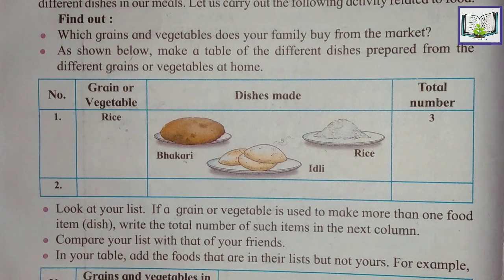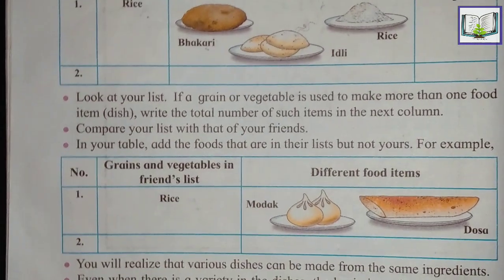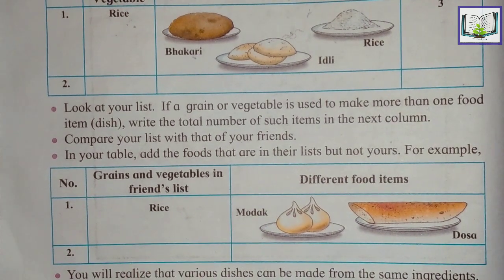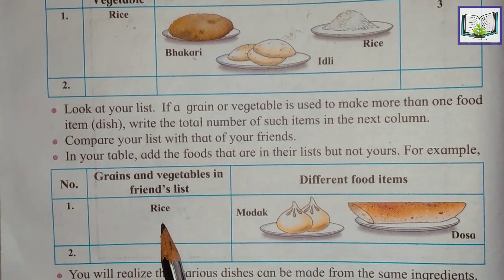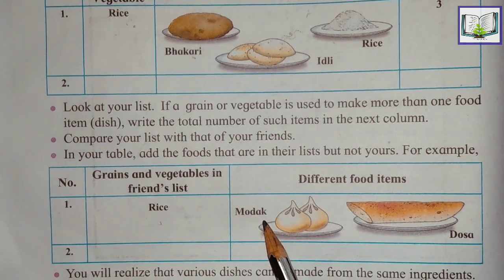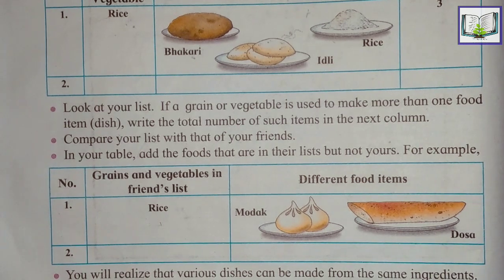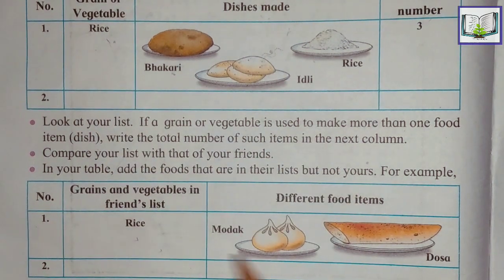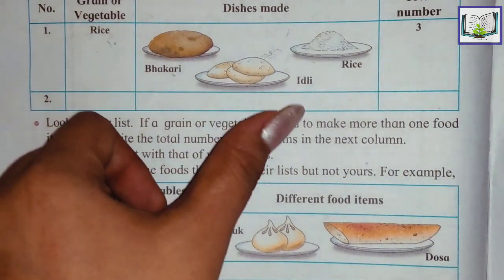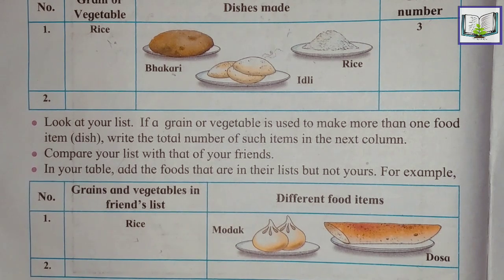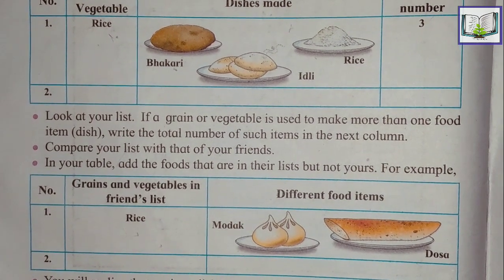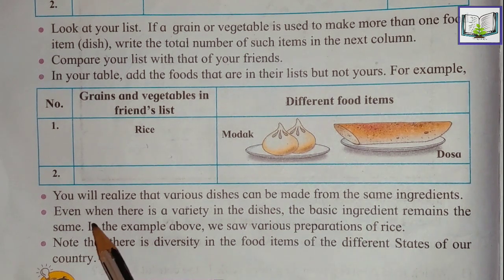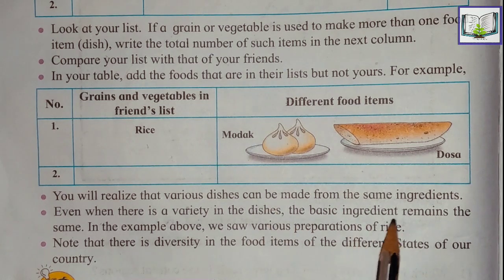In your table, add foods that are in your friend's list but not yours. For example, your friend's list may include dishes like modak and dosas. So the ingredients — rice — are the same, but the dishes are different. Here there is bhakri, idli, and rice, while there they make modak and dosas. You will realize that various dishes can be made from the same ingredients. Even when there is variety in the dishes, the basic ingredients remain the same.